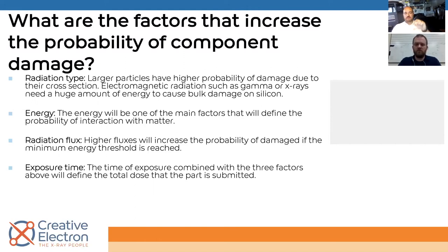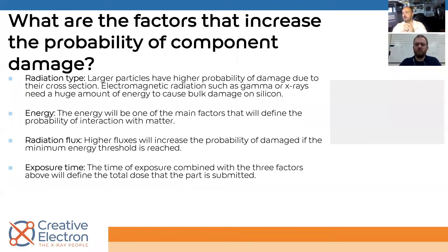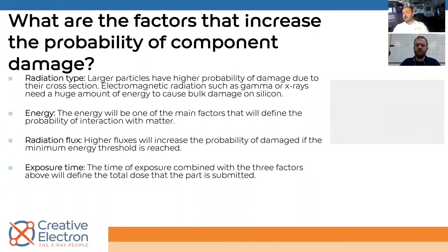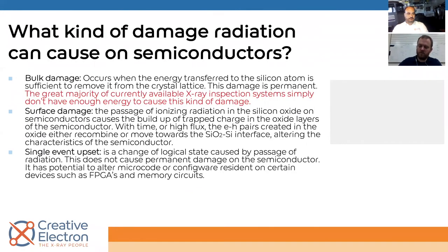The next parameter is radiation flux — how many of those particles or photons are hitting your component per second. In x-ray terms, energy is kV and radiation flux is mA: how much energy the photon has versus how many of those photons are hitting your component every second. Finally, the fourth leg on this chair is exposure time. You need to know all four parameters — type of radiation, energy, flux, and duration — before we can even begin to talk about whether you're going to have damage or not.